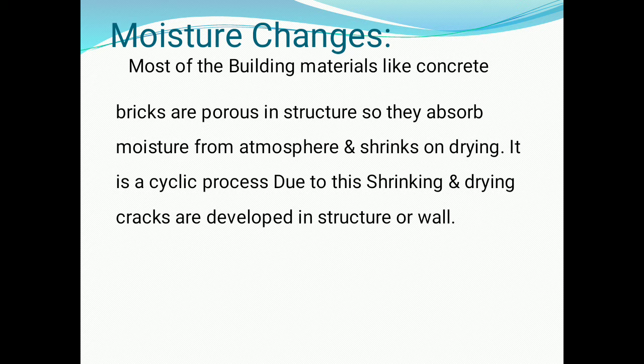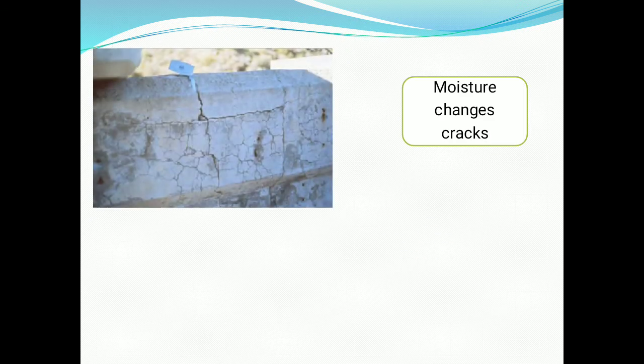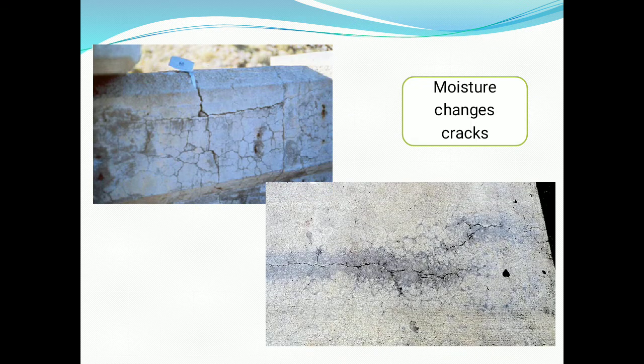The moisture changes depend on the following factors: cement content, water content, curing, chemical composition, and grading of aggregate. We will see how moisture changes affect the structure. These are the cracks developed due to moisture changes in masonry. Nearer the cracks, there is dampness or moisture which affects the structure and develops the cracks.